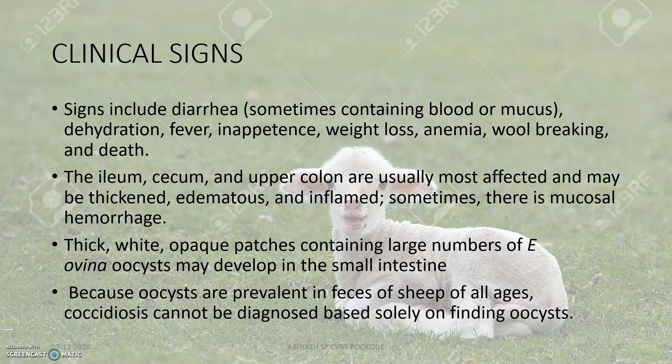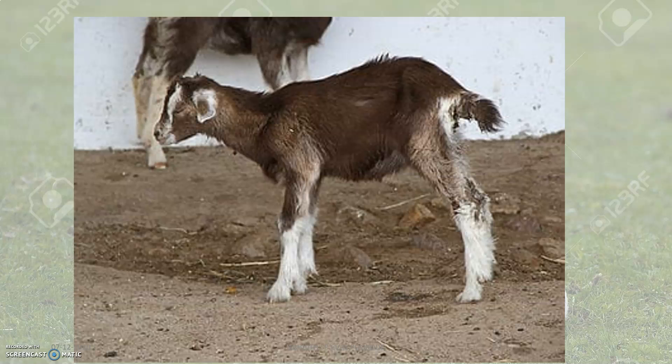Clinical signs include diarrhea — sometimes containing blood or mucus — dehydration, fever, inappetence, weight loss, anemia, and wool breaking. The ileum, cecum, and upper colon are mostly affected and may be thickened, edematous, and inflamed. Sometimes there will be mucosal hemorrhage; thick white opaque plaques containing large numbers of schizonts may develop in the intestine as small whitish specks. In the stool or feces, oocysts will be found along with blood.